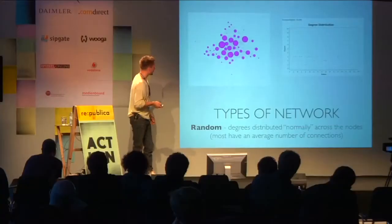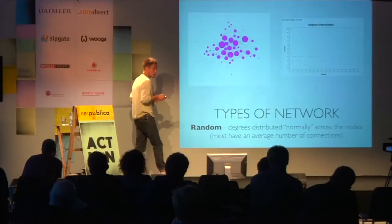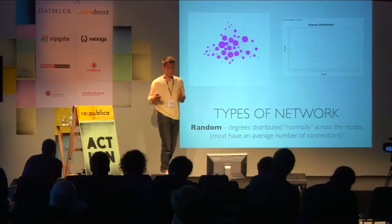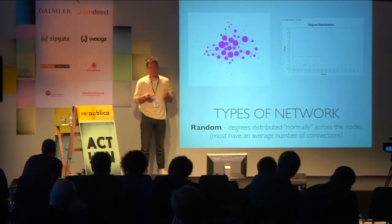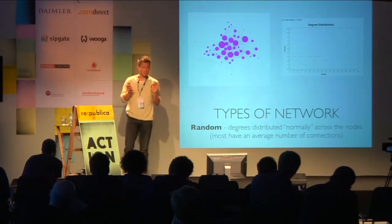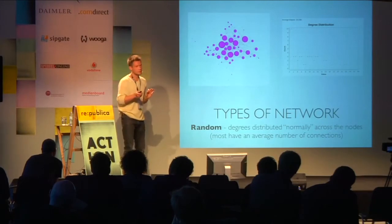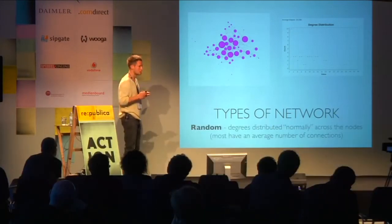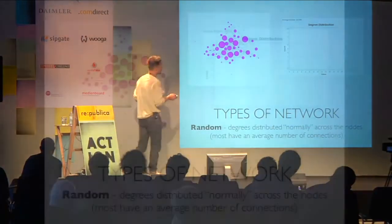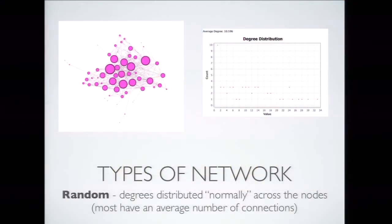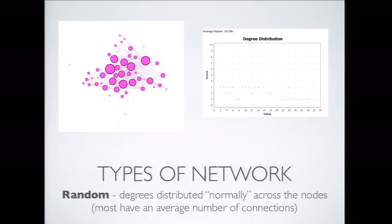Then we have another type: the random network, where most nodes have more or less the same number of connections with few deviations. Very few nodes are very well connected, and very few have very few connections — most nodes share roughly the same number of connections. This is a situation you normally encounter at your workplace or university, where everyone knows each other and everyone has more or less the same number of connections in the group.